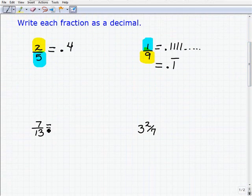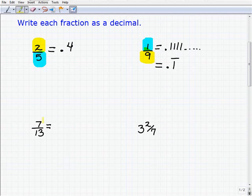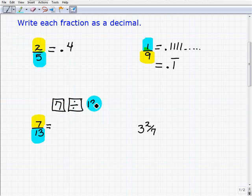Okay, so we have 7 thirteenths. So if you feel comfortable with what we're doing here, go ahead and get your calculator out and tell me what 7 thirteenths is as a decimal. So to do that, you're going to take 7, plug that into your calculator, hit the division operator, and then plug in 13. So you're going to go 7 on your calculator, division, and then 13, and then you're going to hit equal.